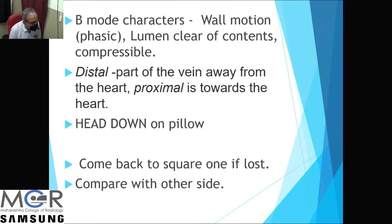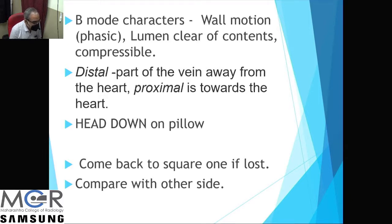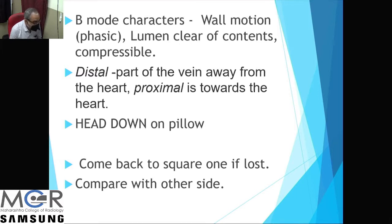Venous walls show certain B-mode characteristics. We should look for wall motion that is phasic rather than pulsatile, and the lumen should be clear of contents. From the common femoral vein down to the tibials, they should be compressible. Compressibility cannot be assessed in the iliac and IVC. When describing a vein, the part away from the heart is distal and proximal is towards the heart — the reverse of how arteries are described.